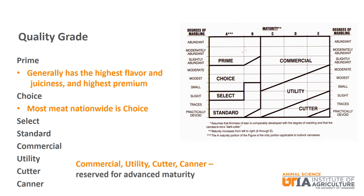Prime is generally considered the highest flavor and juiciness and will have the highest premium. Most meat nationwide falls into Choice. The bottom four — Commercial, Utility, Cutter, and Canner — are reserved for more advanced maturity. You can see in the graphic that to be in the top four quality grades, a carcass has to be either A or B maturity, and to be Prime, a carcass must have at least slightly abundant marbling, and to be Choice, must have at least small marbling.